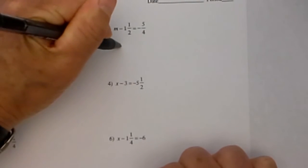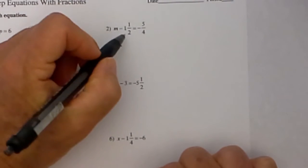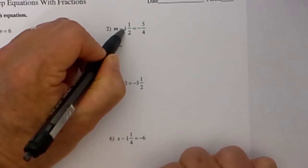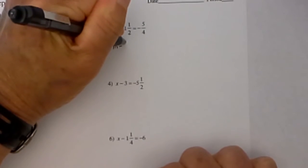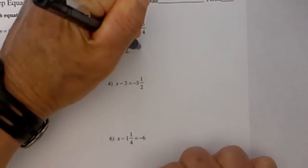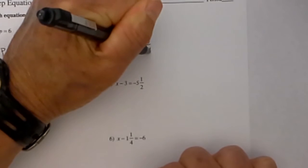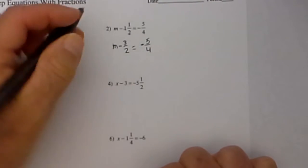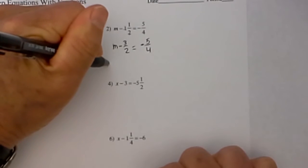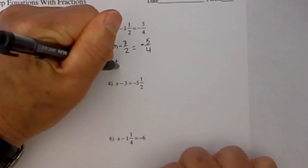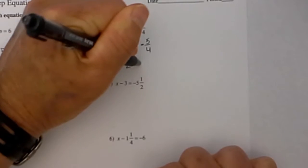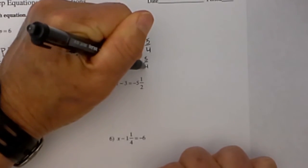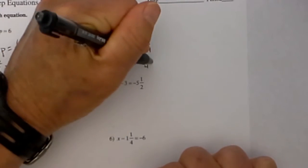In order to get started first I will convert this to an improper fraction. 2 times 1 is 2 plus 1 is 3 halves is equal to negative 5 fourths. Now to isolate the m I now need to add 3 halves to both sides so it will be m plus 3 halves minus 3 halves is equal to negative 5 fourths plus 3 halves.